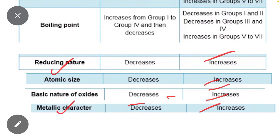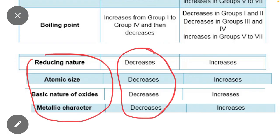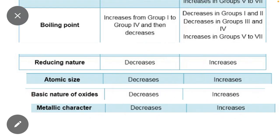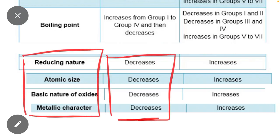The remaining properties - reducing nature, atomic size, basic nature of oxides, and metallic character - always decrease in periods and always increase in groups. Make two groups: which properties always increase and which always decrease. Then it is easy to memorize this sequence.